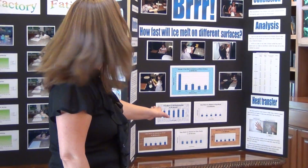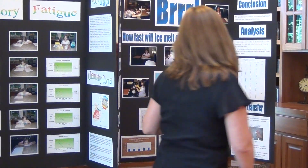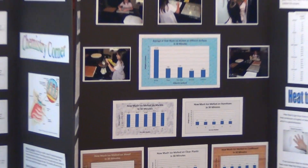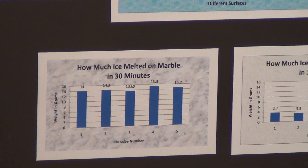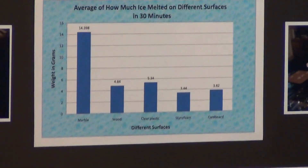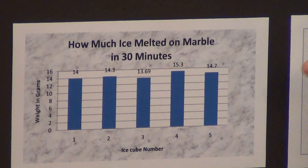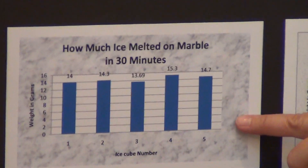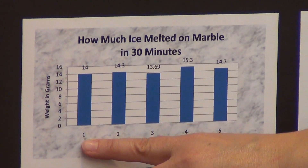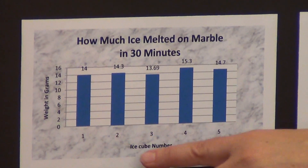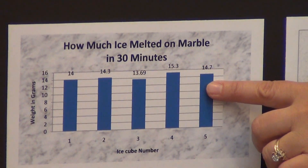For this first example, the question on the project was: how fast will ice melt on different surfaces? When she made these charts, this one showed the averages. This chart showed how fast ice melted — specifically, how much ice melted on marble in 30 minutes. She wrote how many grams melted for each ice cube — the first, second, third, fourth, and fifth — and it was quite a bit for the ice in that 30 minutes.